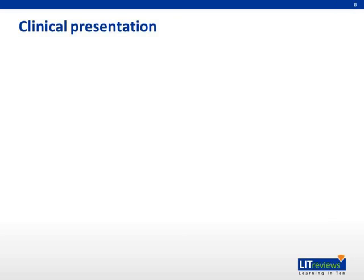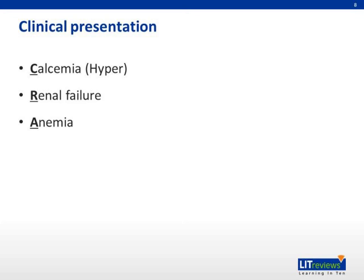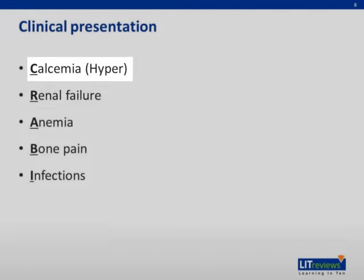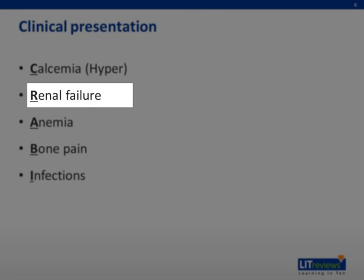Most patients of myeloma present with hypercalcemia, renal failure, anemia, or bone pains. The acronym for clinical features is CRAB, and these reflect evidence of end-organ damage. Hypercalcemia is due to bone damage. Renal failure is due to renal damage caused by paraprotein, dehydration, and concomitant use of nephrotoxic drugs.